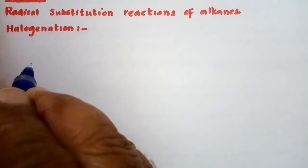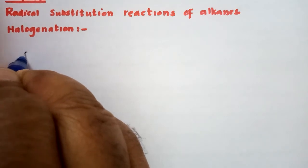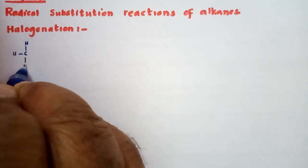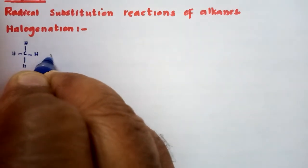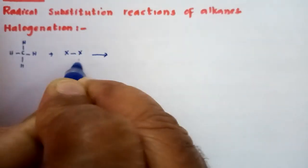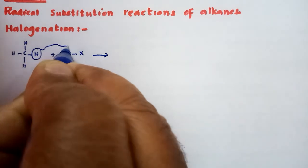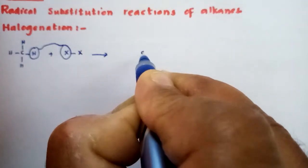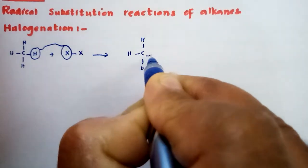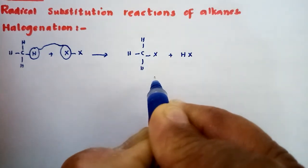An example of this is the Halogenation Reaction. A reaction in which one or more hydrogens of an alkane are replaced by a halogen group is called a Halogenation Reaction. For example, if we react methane with a halogen X₂, and the hydrogen is replaced by the halogen, this results in the formation of a haloalkane plus HX.